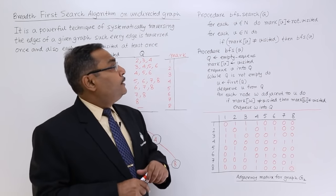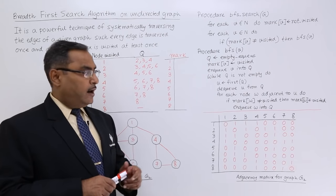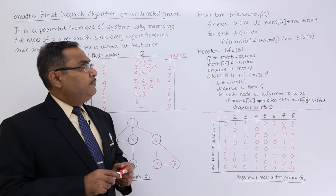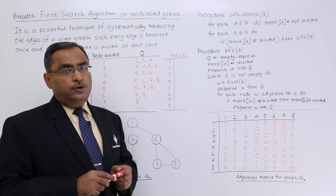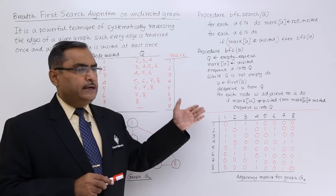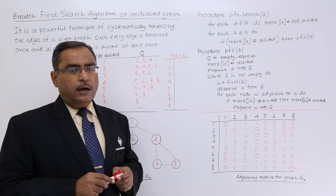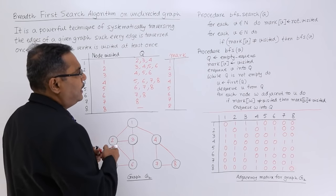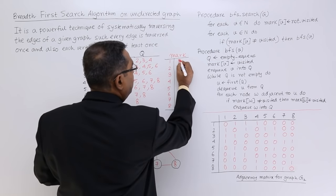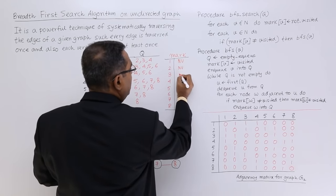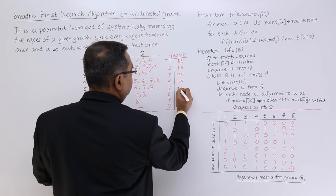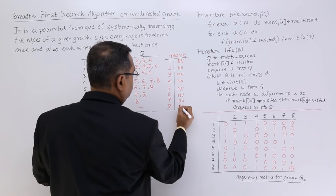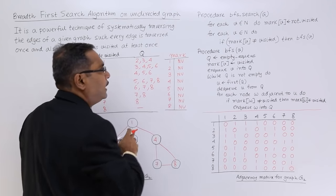Procedure BFS_Search takes G as the graph. For each V belonging to N, mark of V is set to not visited — the same initialization we did earlier for the DFS algorithm. This mark array has been initialized with not visited for all 8 locations in this for loop.